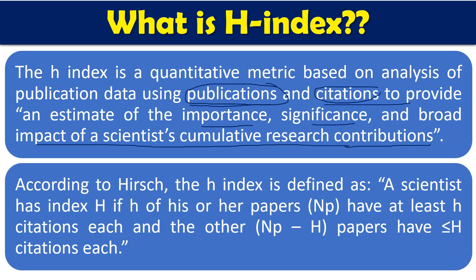According to Hirsch, a scientist has index H if H of his or her papers have at least H citations each, and the other NP papers have less than or equal to H citations. Simply stated: if any author or researcher has N number of papers with N number of citations each, then their H index is N. For example, if I have 10 publications, different publications will have different numbers of citations, so how do we calculate it?